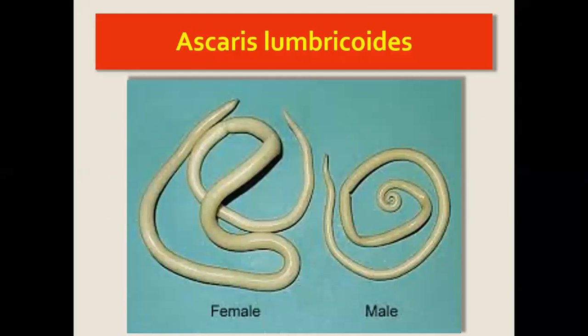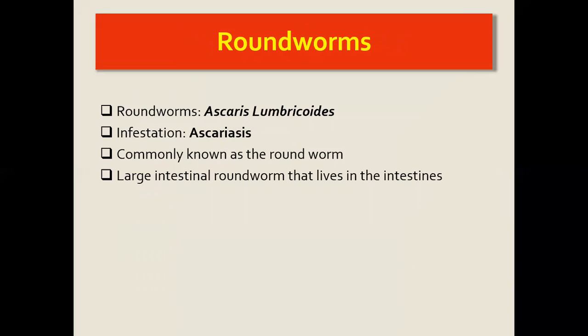Today we are going to look at Ascariasis, which is one of the commonest helminthic infections. This is an example of how the Ascaris lumbricoides looks like — what we normally know as roundworms. You can see the female and the male Ascaris. The roundworms, which is what Ascaris lumbricoides are commonly known as, cause the infestation or infection of Ascariasis, which is the condition.